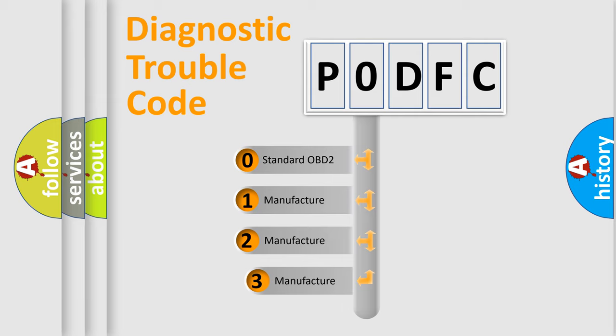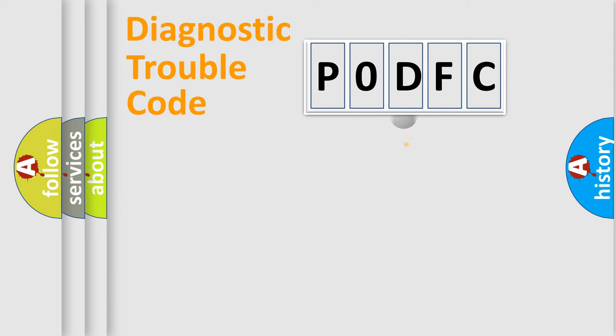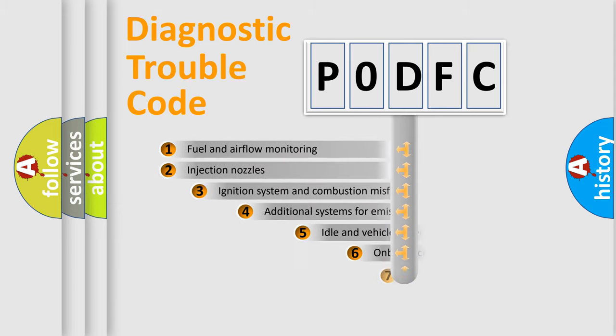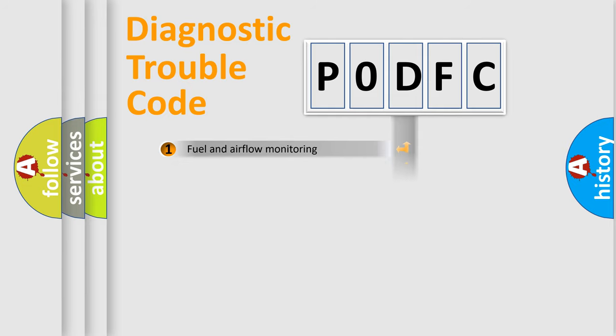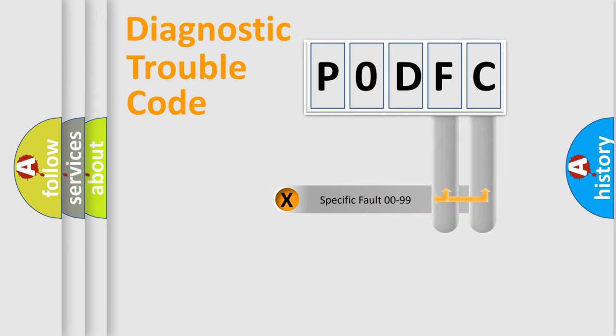If the second character is expressed as zero, it is a standardized error. In the case of numbers 1, 2, or 3, it is a manufacturer-specific expression of the car-specific error. The third character specifies a subset of errors. The distribution shown is valid only for the standardized DTC code. Only the last two characters define the specific fault of the group.